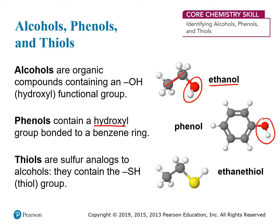You can see the OH group again in phenol. Thiols are similar to alcohols, but they contain an SH group instead of an OH group. Here you can see the SH group with the sulfur atom drawn in yellow. This one also has an 'eth' prefix because it's two carbons, but now that it's a thiol, instead of calling it ethanol, we call it ethanethiol.